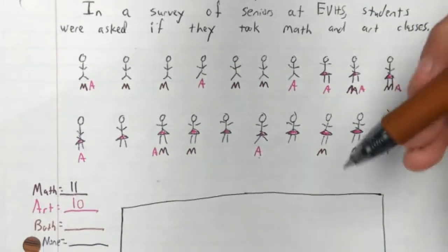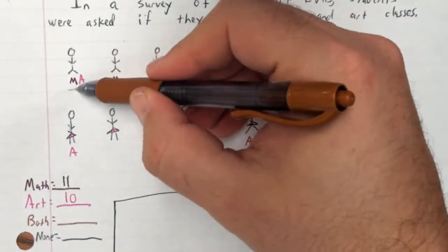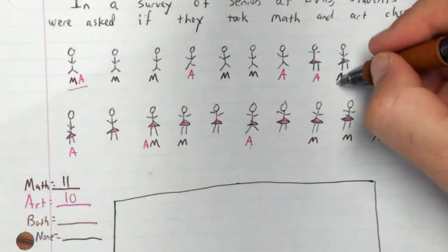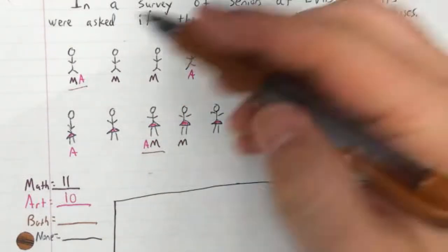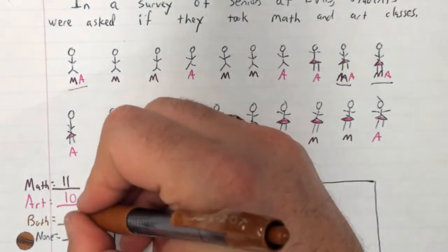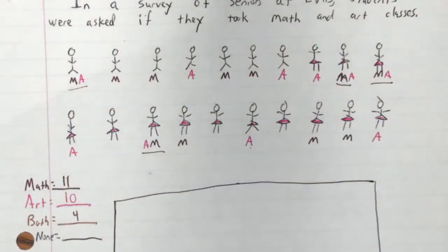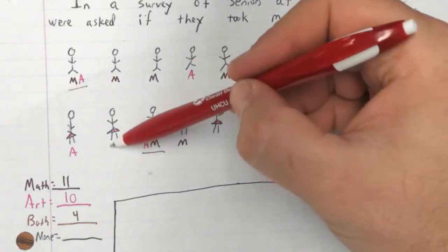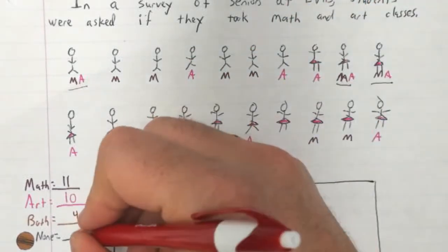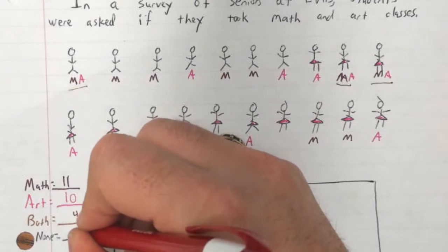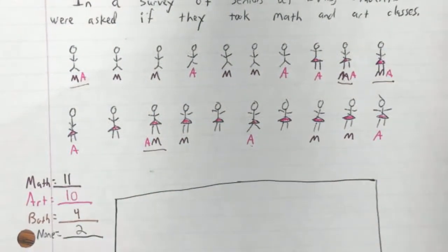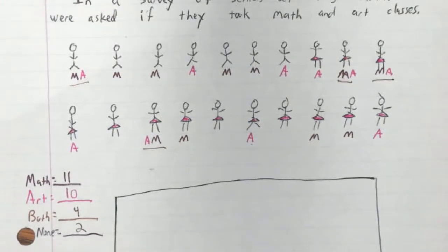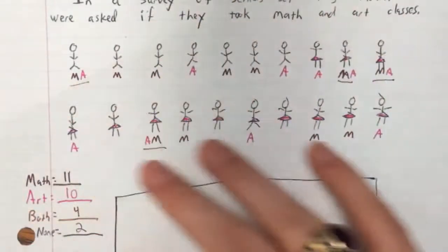But what about the both? This guy is taking both, this girl, these two are taking both, and this girl is taking both. So we've got one, two, three, four of them taking both classes. And you know seniors have off period - sometimes looks like this girl and this girl have no math or art, so we've got two that fit into that category.